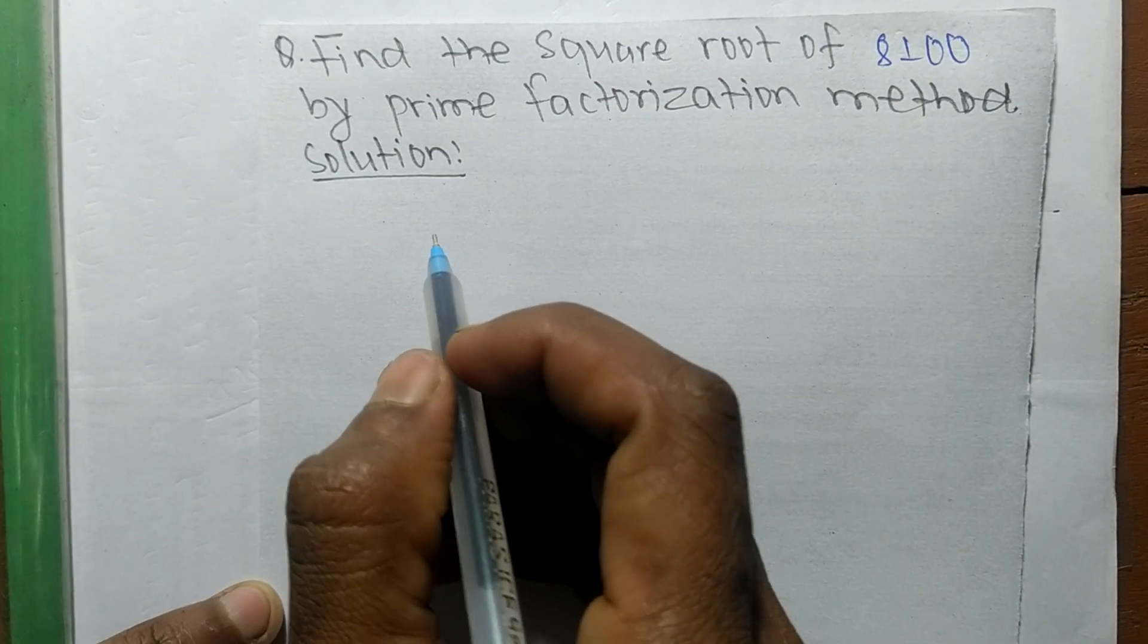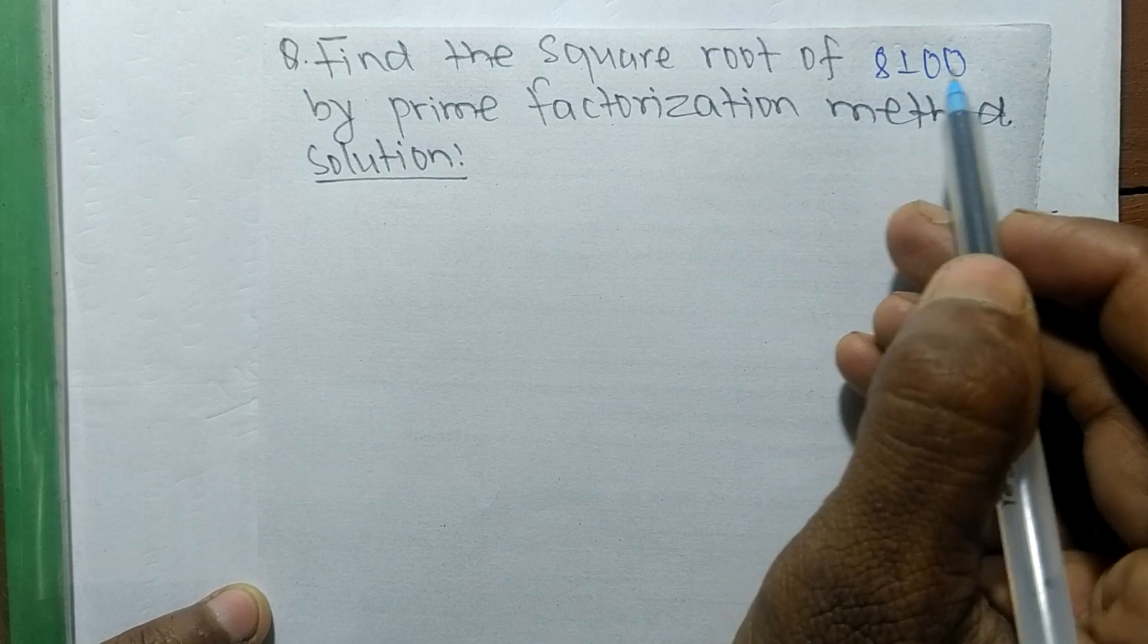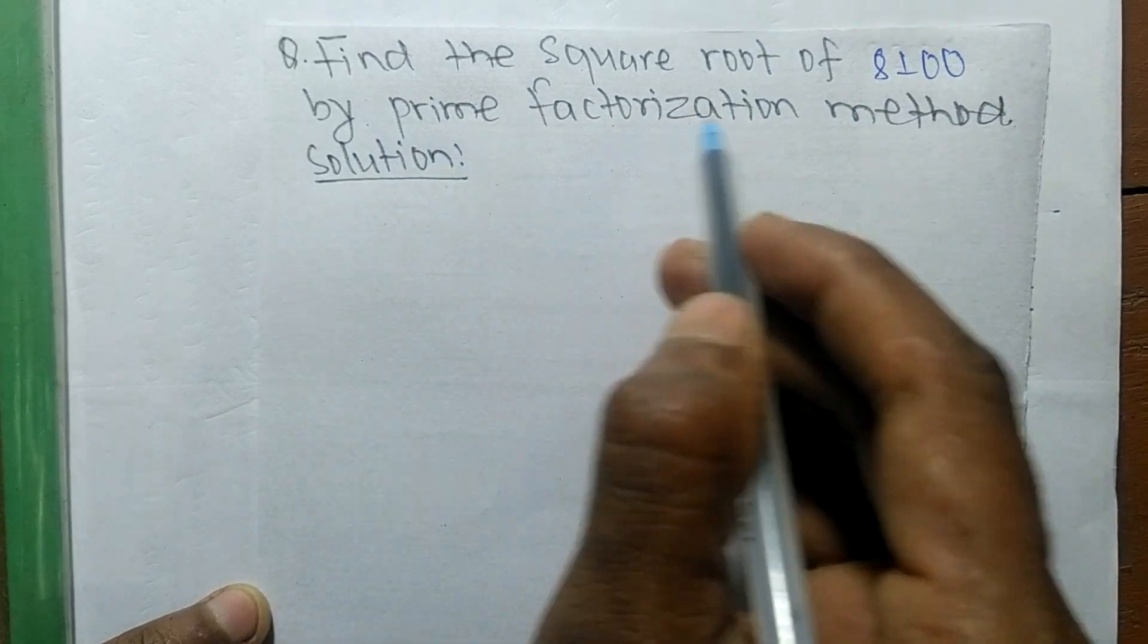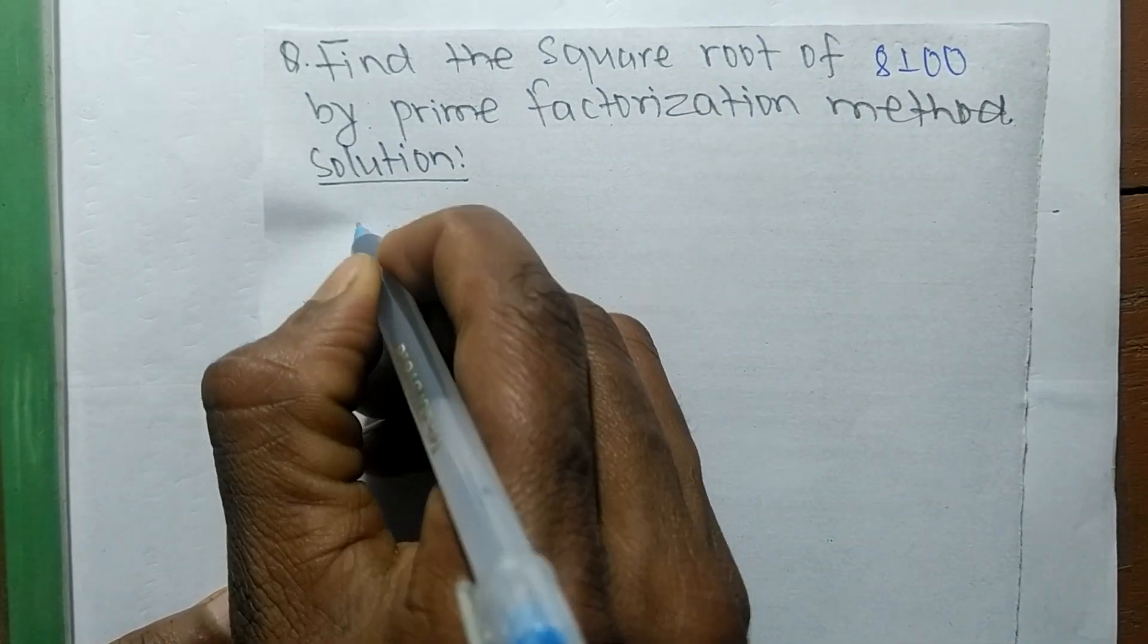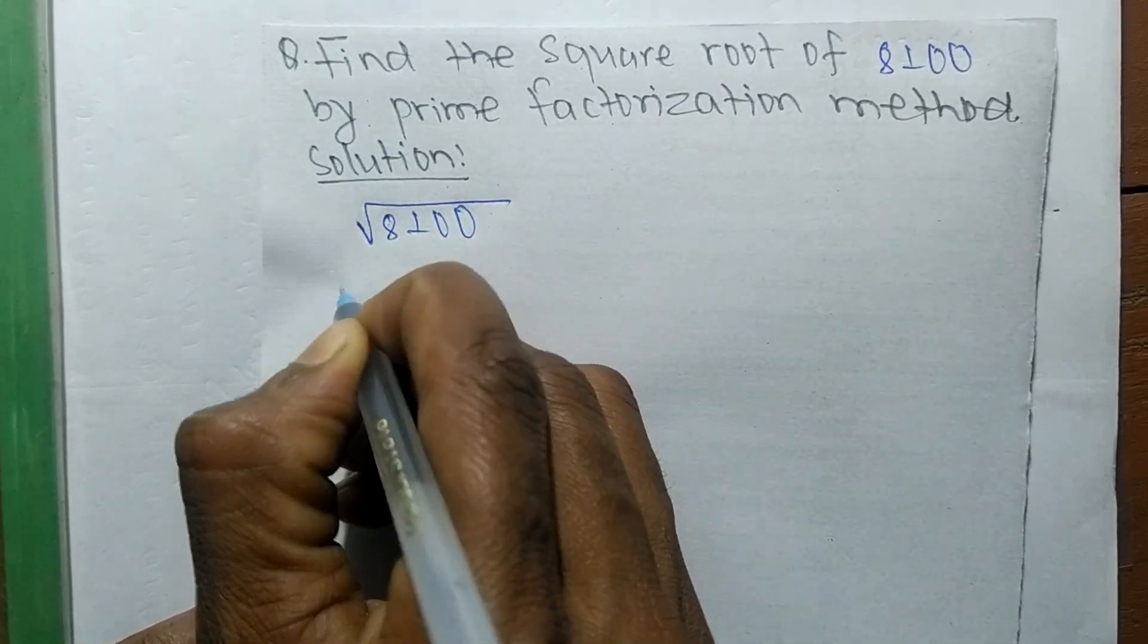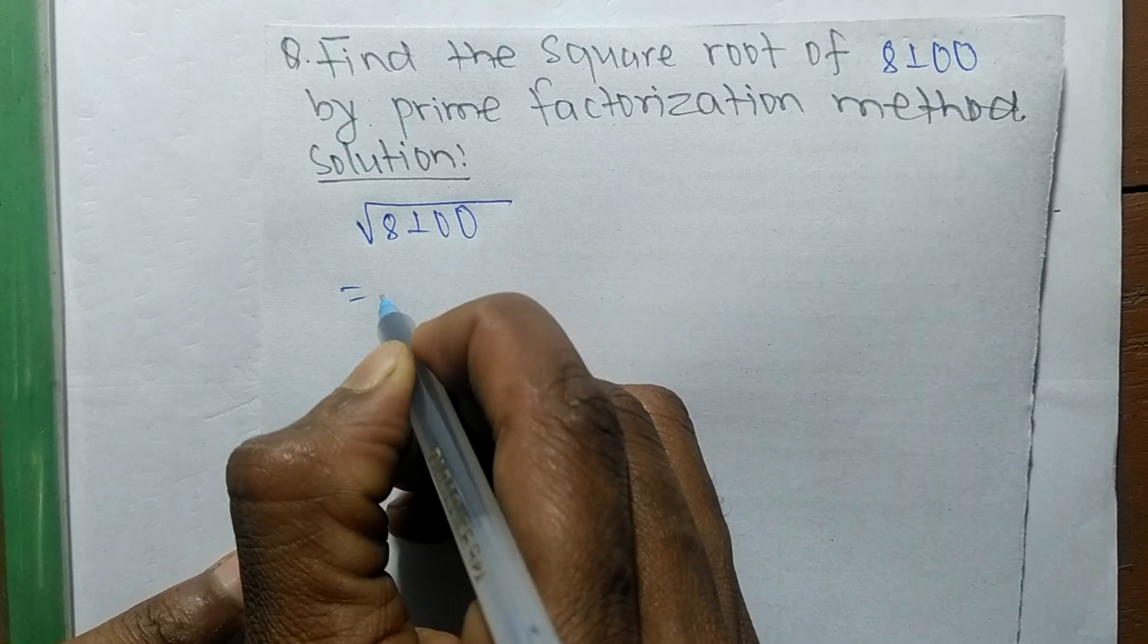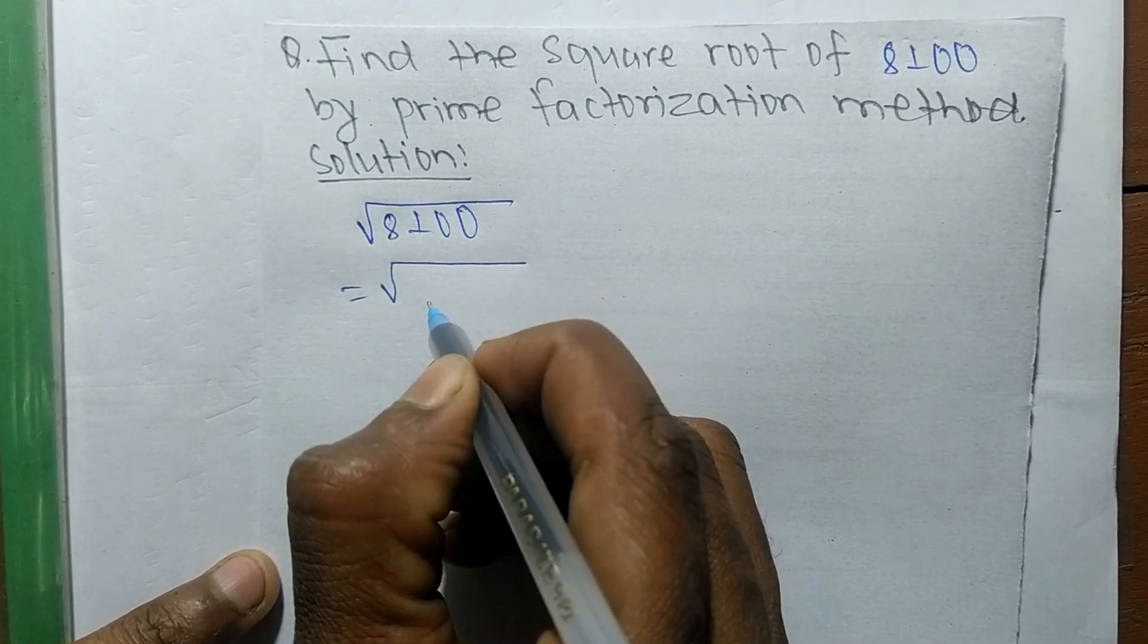Today in this video we shall learn to find the square root of 8100 by prime factorization method. The square root of 8100 - when there is a combination of numbers, we separate it into two parts: the number part and the zero part.